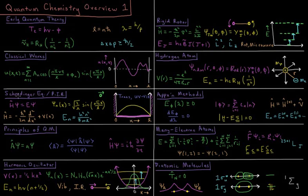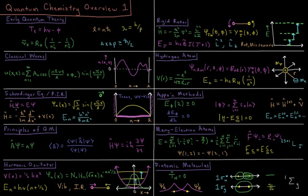We then use that to derive the Schrödinger equation, H-psi equals E-psi. The Hamiltonian operator acting on a wave function equals the total energy acting on the wave function. We have the operator here, the wave function is an eigenfunction, and the energy is an eigenvalue.